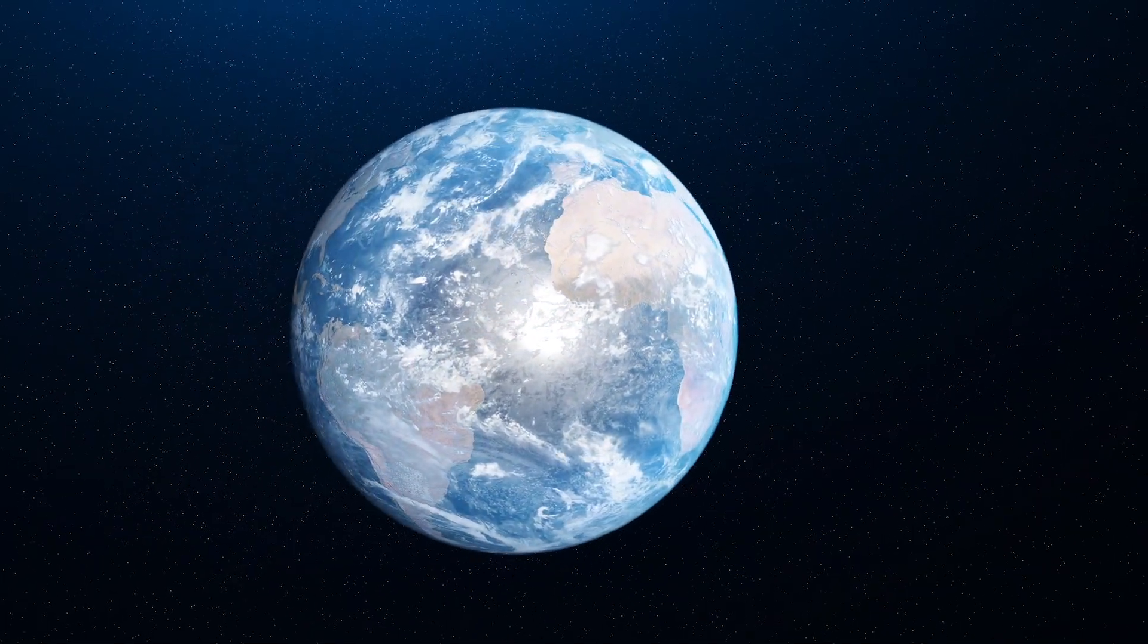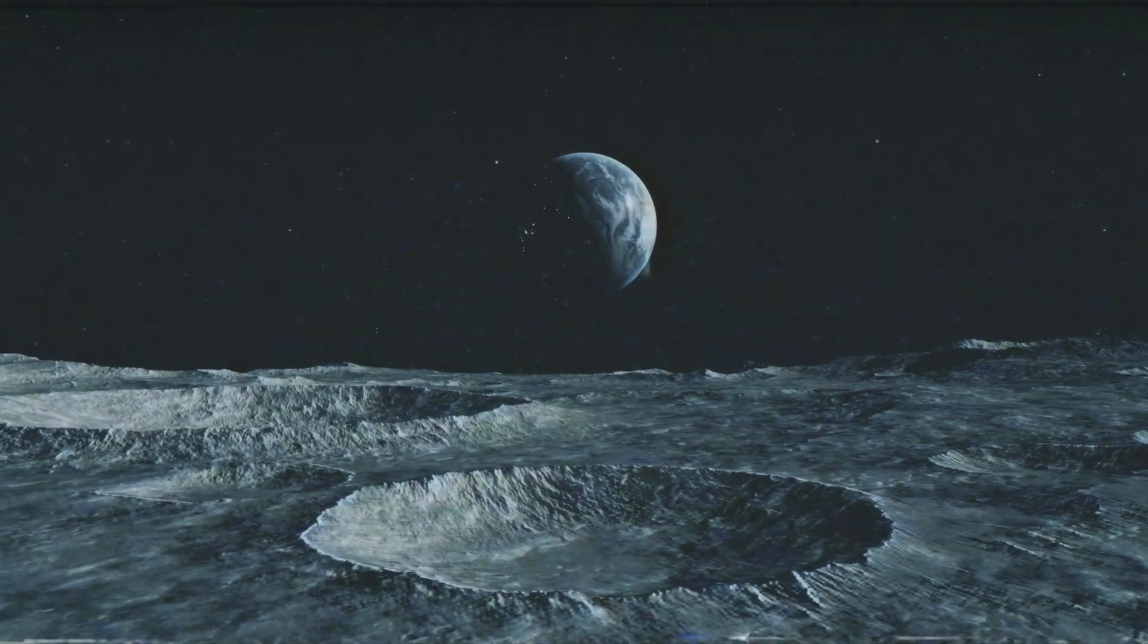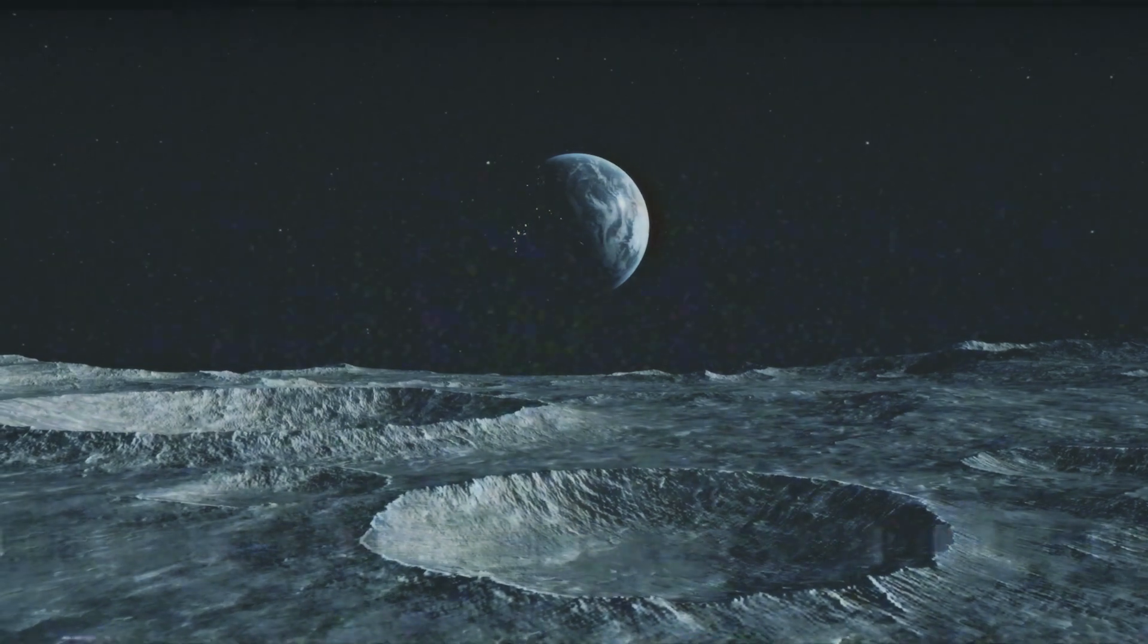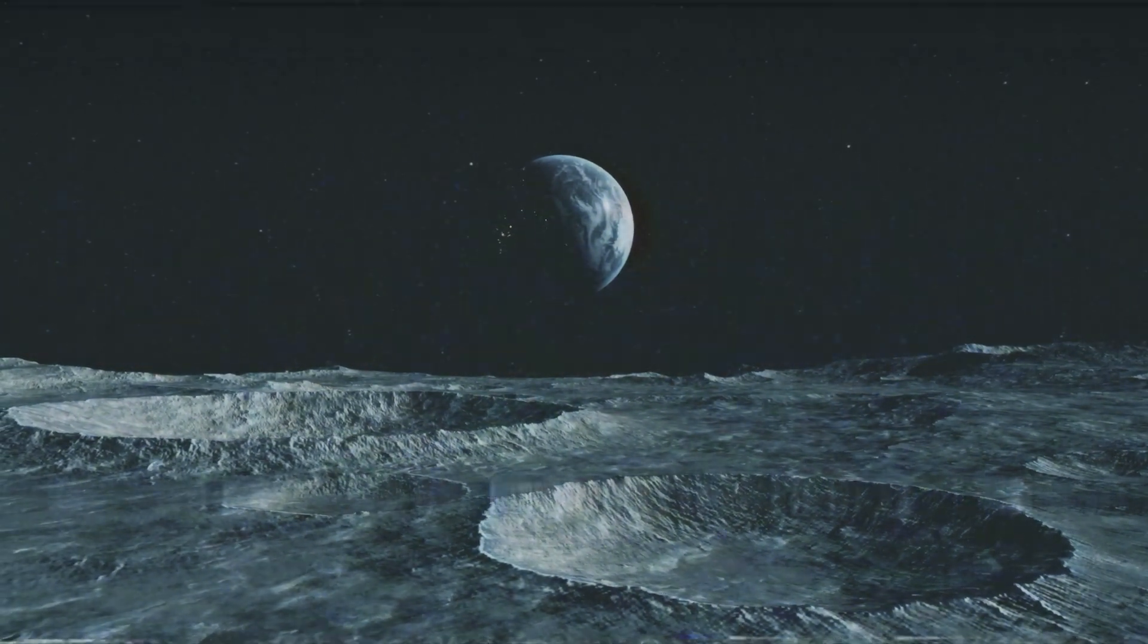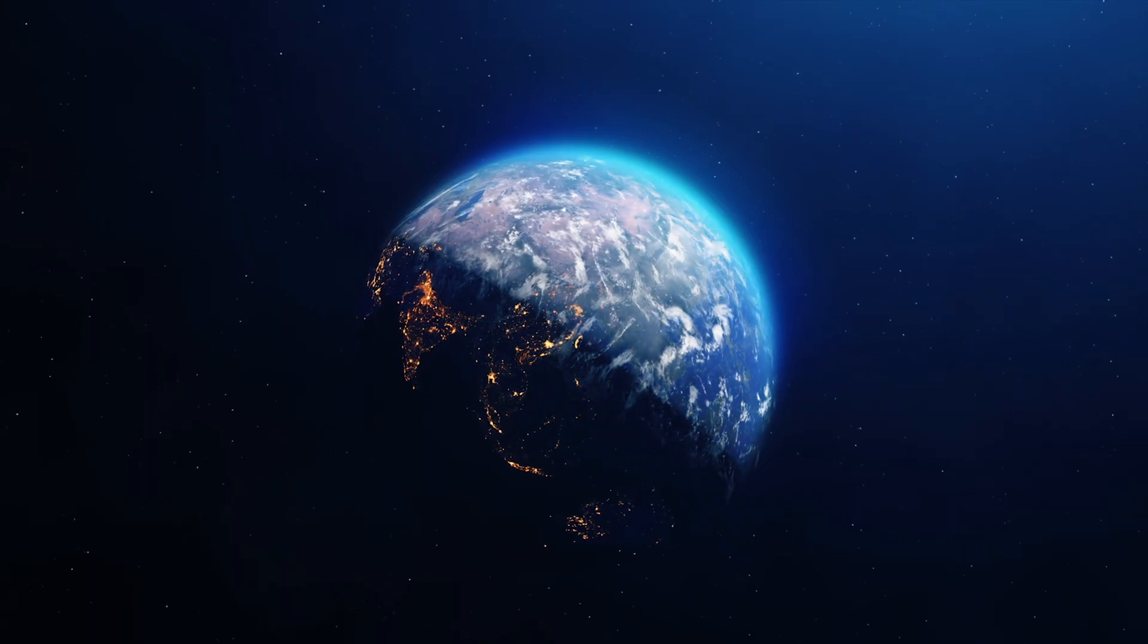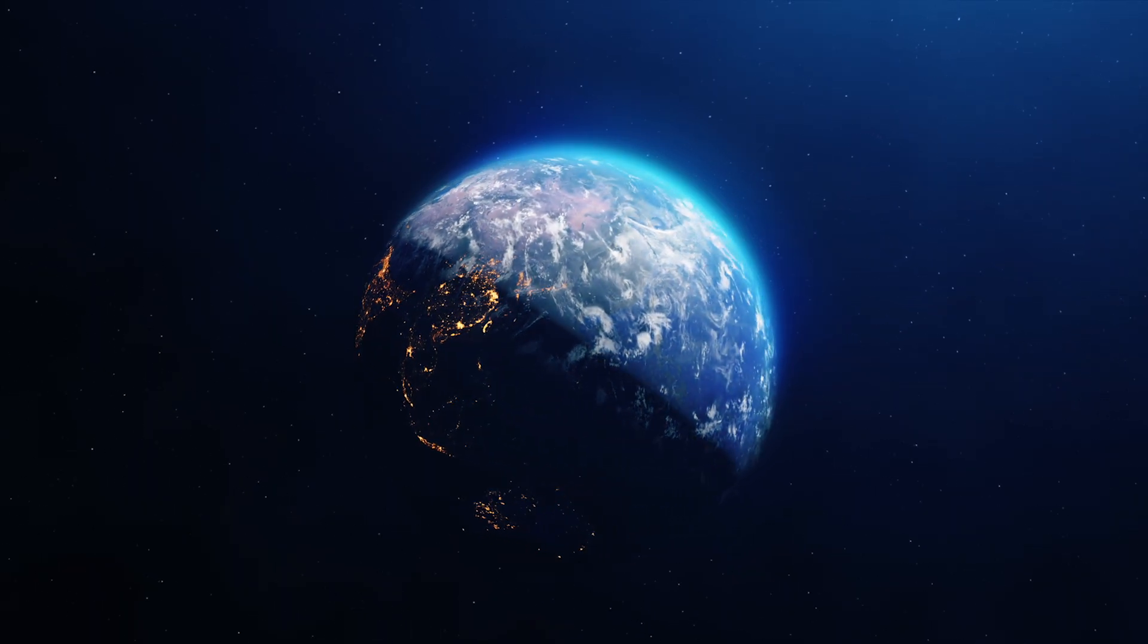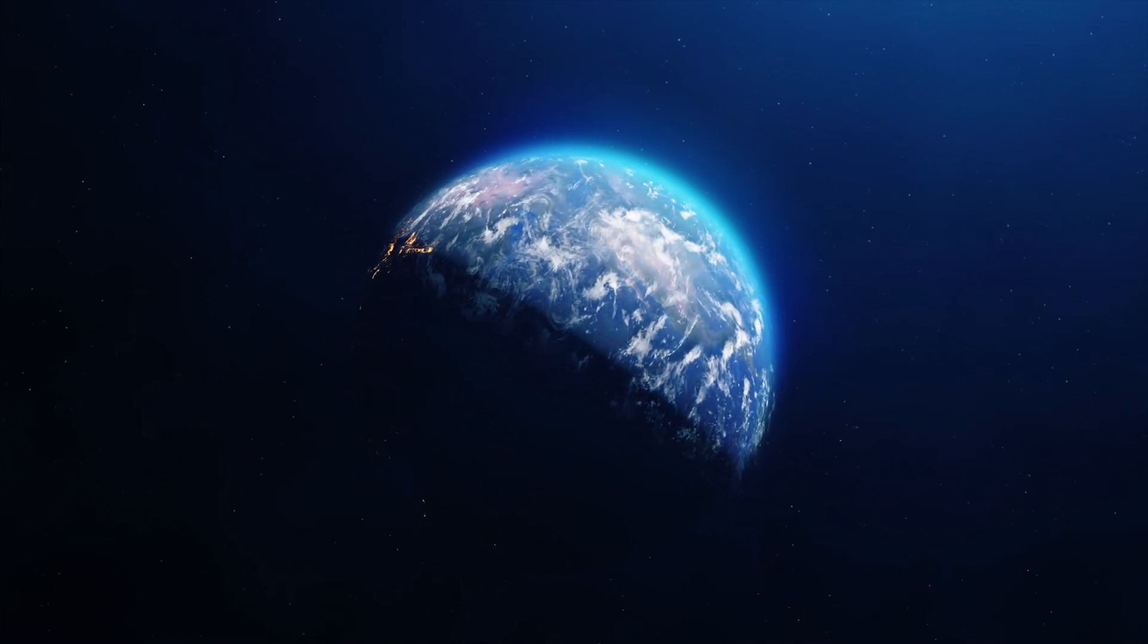Imagine if Earth were destroyed by some catastrophic event. Its fragments would keep spinning around the Sun, inheriting the planet's angular momentum. Luckily, this isn't something we need to worry about anytime soon. Even though Earth's rotation is gradually slowing due to the Moon's gravitational pull and the faint resistance of space, this will take billions of years.